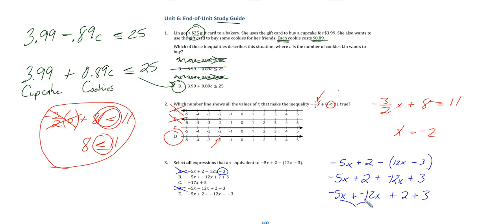Negative 5 and negative 12 add to make negative 17x, and 2 plus 3 make 5. So we're looking for negative 17x plus 5, so we know that C is correct.